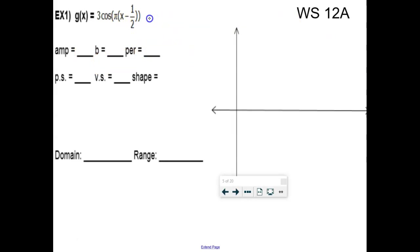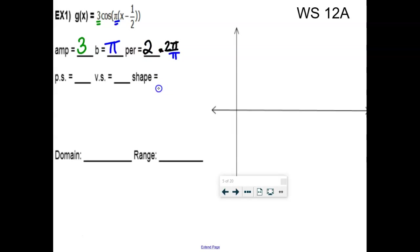This equation is already in factored form — notice how the B value is taken outside, multiplied by (x minus a value). You can clearly see the B value is π. The amplitude is the absolute value of the number in front of the function — so 3. The period is 2π divided by B: 2π divided by π equals 2. This is interesting — like a real-life question where something takes 2 seconds to complete one cycle. The phase shift — x minus one-half — means right one-half.